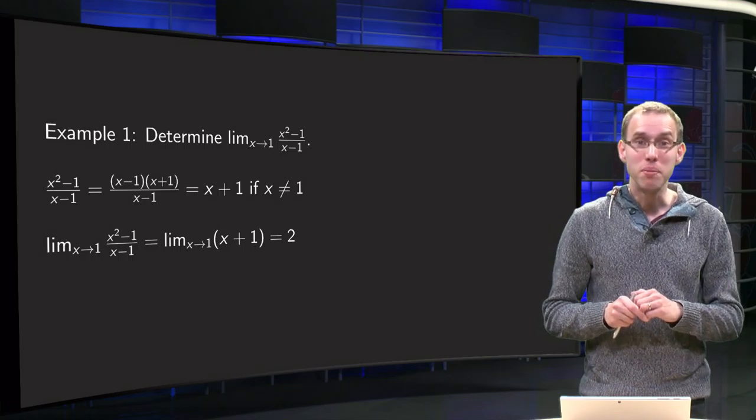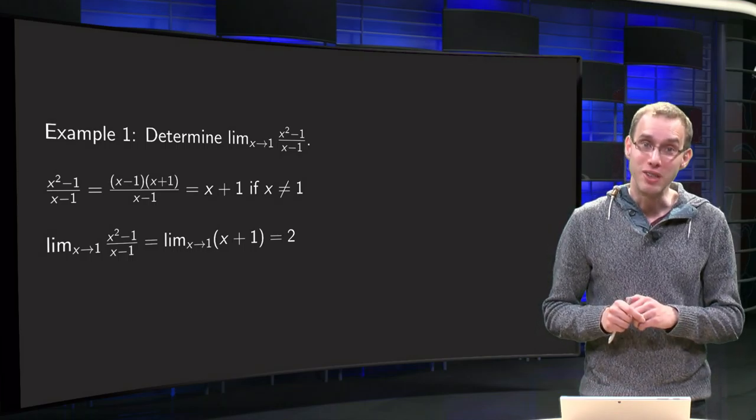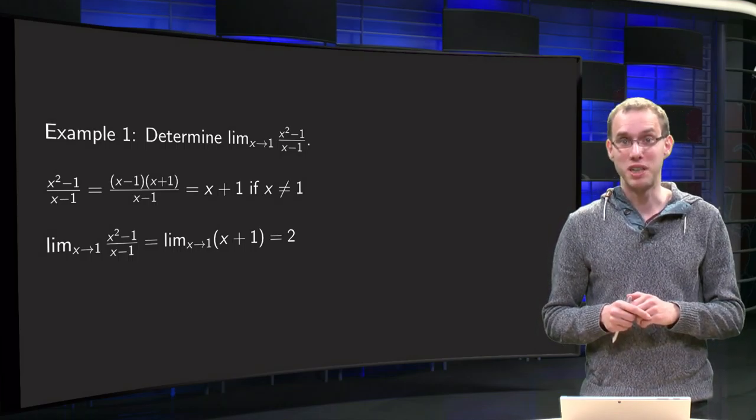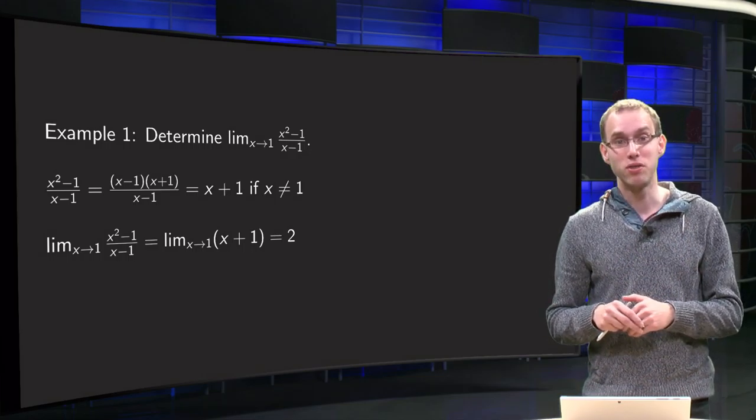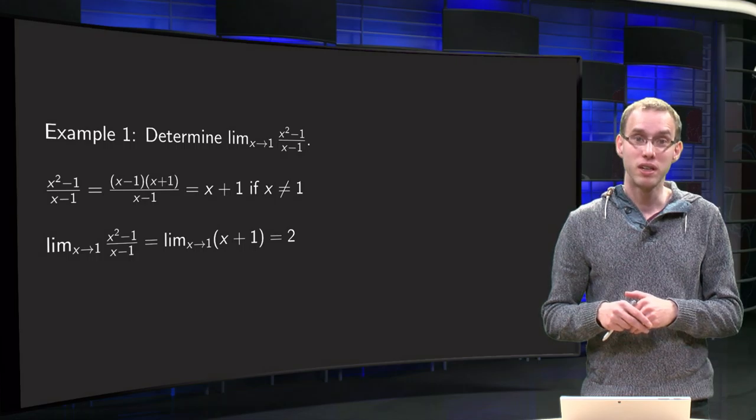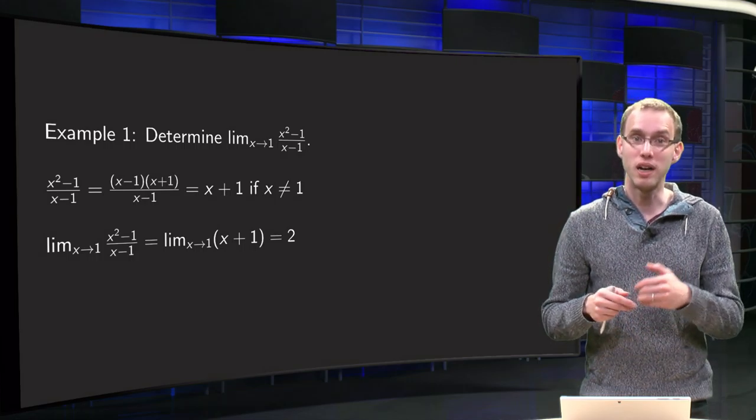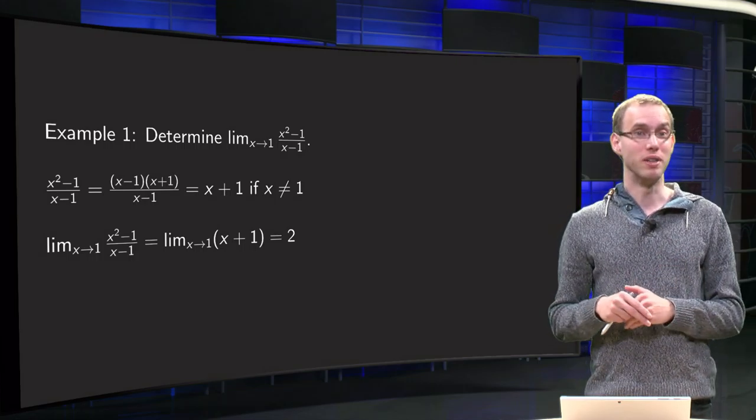Unfortunately, for most limits we encounter, we will not be able to use our basic rules directly. We end up, for example, with a denominator whose limit equals zero, which means that we cannot apply our rules like the quotient rule directly. What to do in that case?